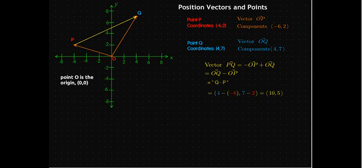So, I'll take from the first coordinates, 4 minus a negative 6, and then 7 minus 2, and that'll give me the vector PQ having components 10 comma 5.